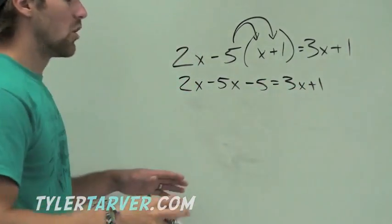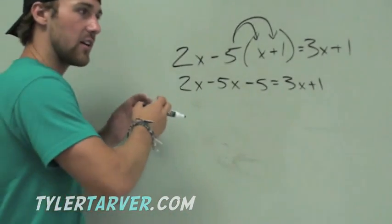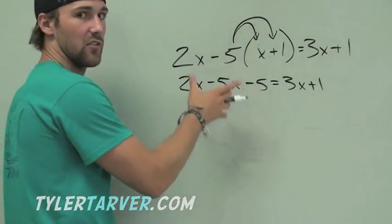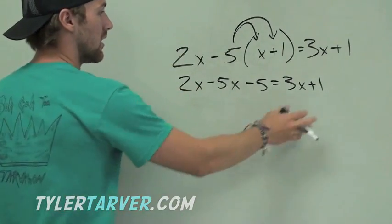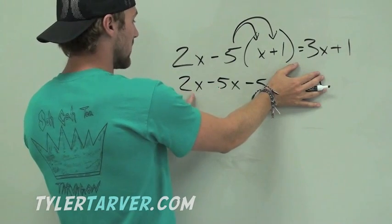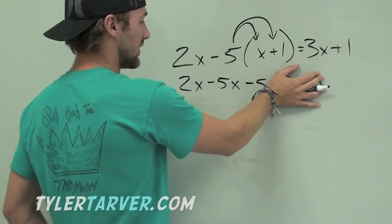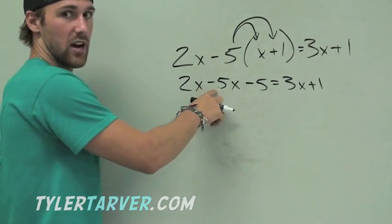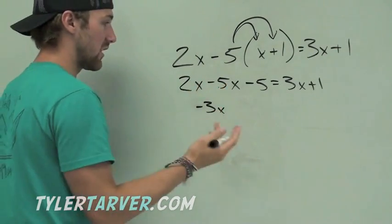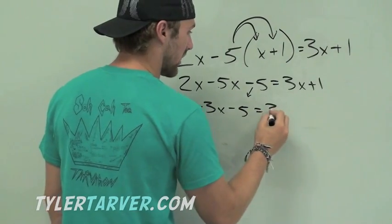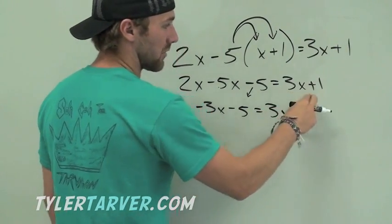Now, once again, we're going to get all our x's on one side, all our numbers on the other side. First, we can simplify stuff on the same side of the equal sign. Let's cover up this. See anything that goes together? Why, yes there is. 2x and 5x. 2x minus 5x is negative 3x. All you do is you do 2 minus 5, which would be negative 3. Keep it in front of the x. Bring down the negative 5, and then bring down everything else. Because there's nothing over here that can mix together.